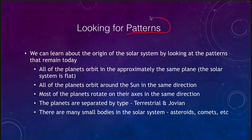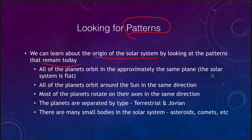These patterns are quite important because we can learn about the origin of the solar system by looking at what remains today. What we notice is that all of the planets orbit in approximately the same plane — that means the solar system is flat. So if you draw the solar system on a piece of paper, that is really not a bad approximation for what the solar system looks like.